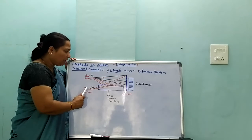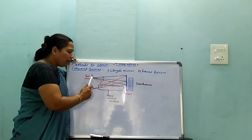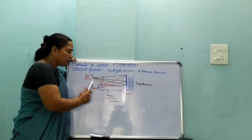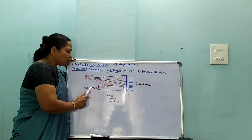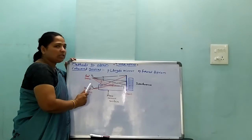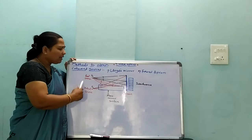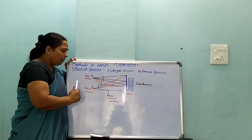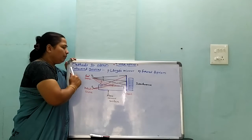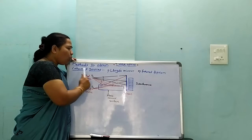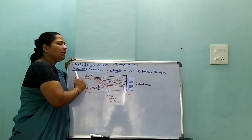To prepare the coherent sources, Lloyd's method is used. S1 is the real source and S2 is the virtual source. Another method to prepare or obtain the coherent sources is the second method.